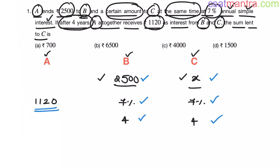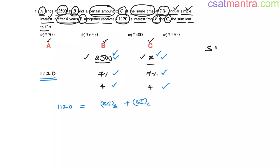Now, we have total simple interest that is 1120. This is equal to simple interest obtained on the amount given to B plus simple interest obtained on the amount given to C. Simple interest formula we know: P, N, R by 100.